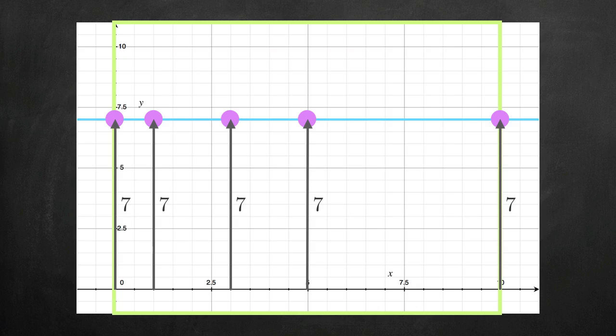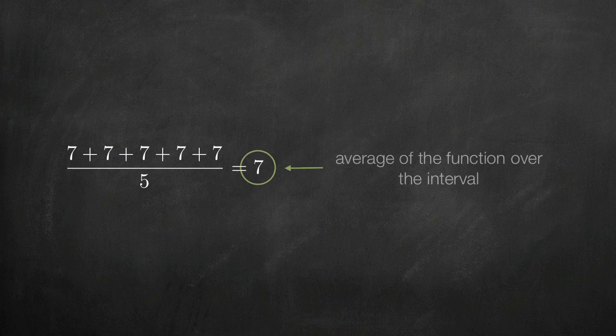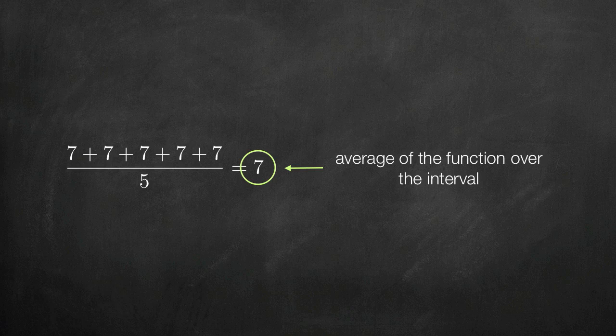When we're trying to find average value, we're basically just looking for the average height. So we can do this the same way we took the average of the five numbers. We test the function at 5 x values, get the value, or height, of the function there, then add the heights together and divide by 5. This tells us that the average value of the function on the interval is 7.